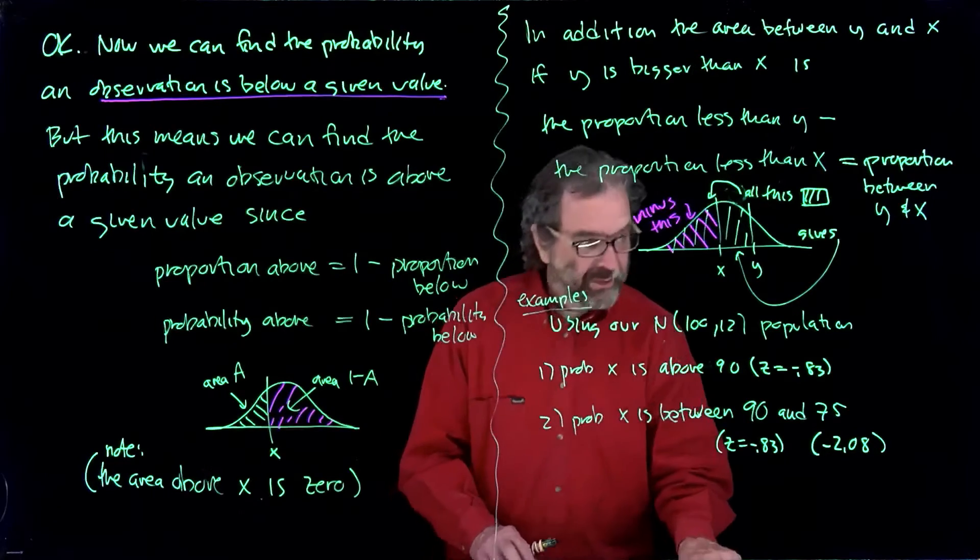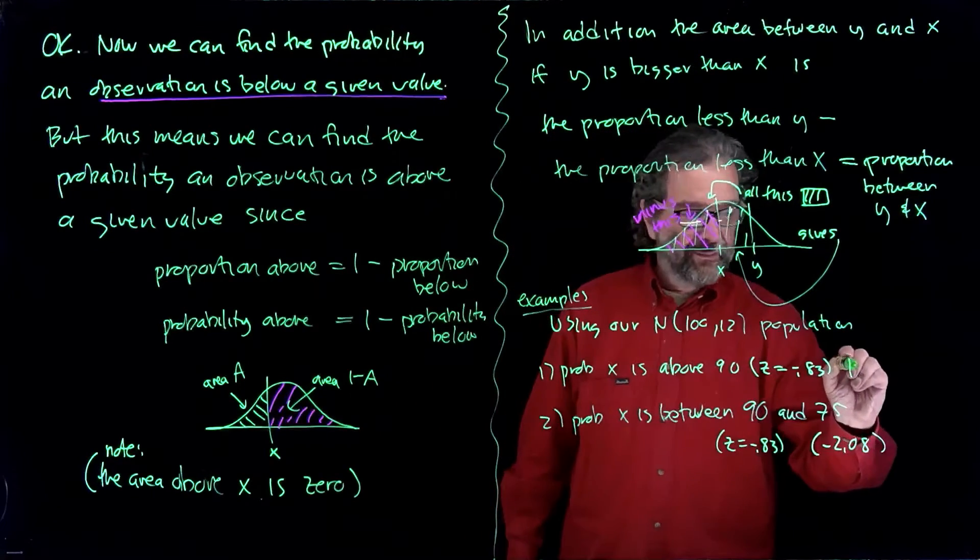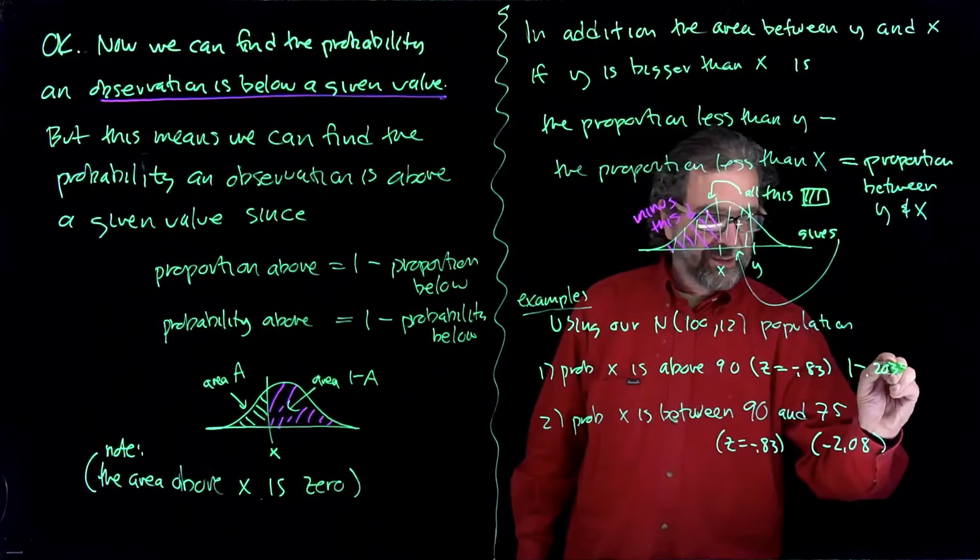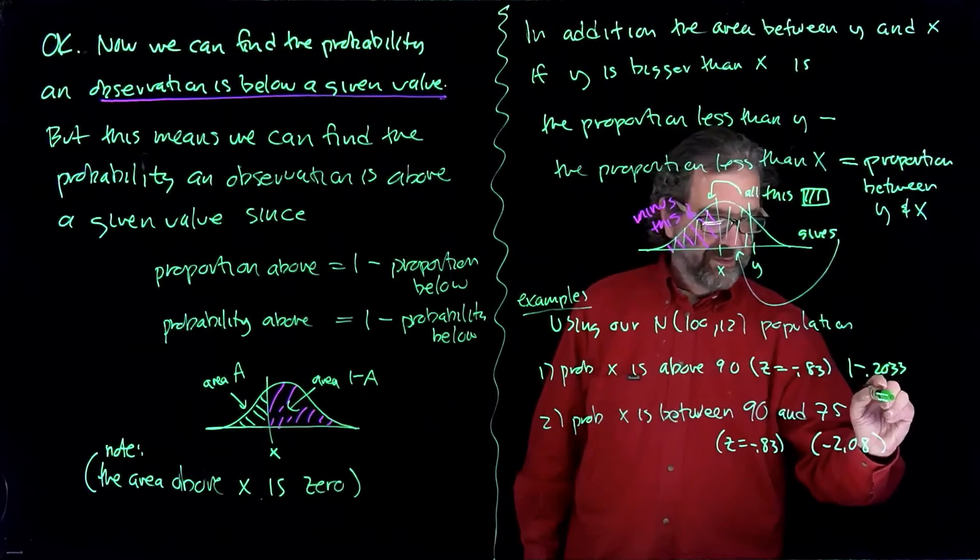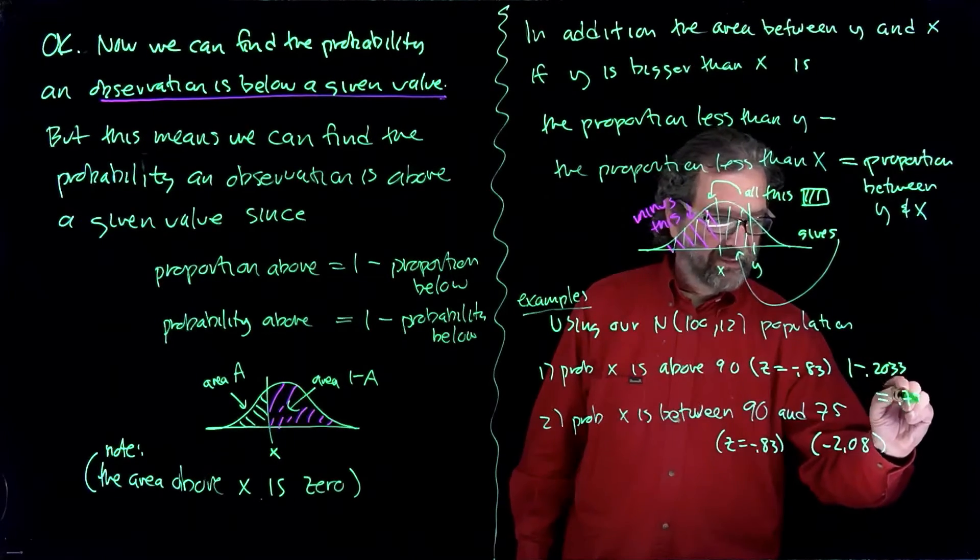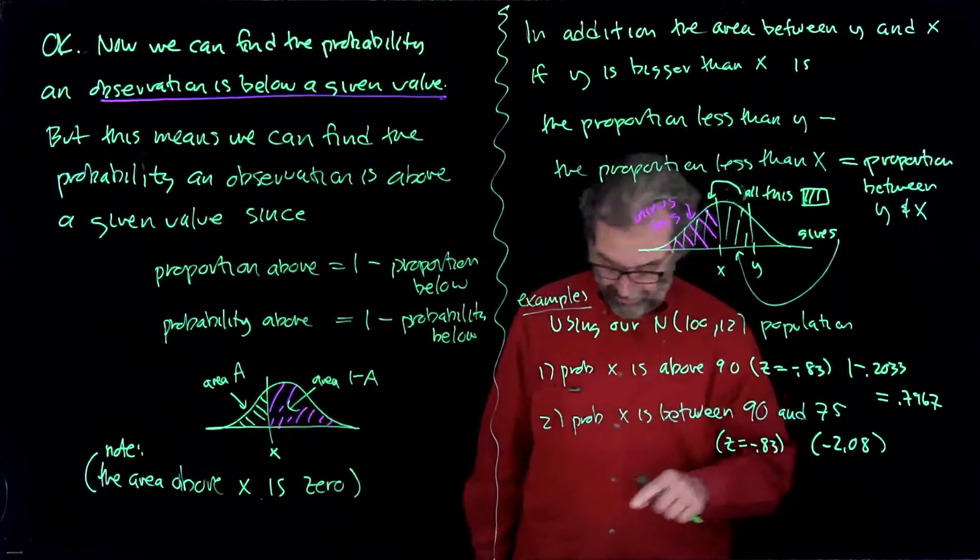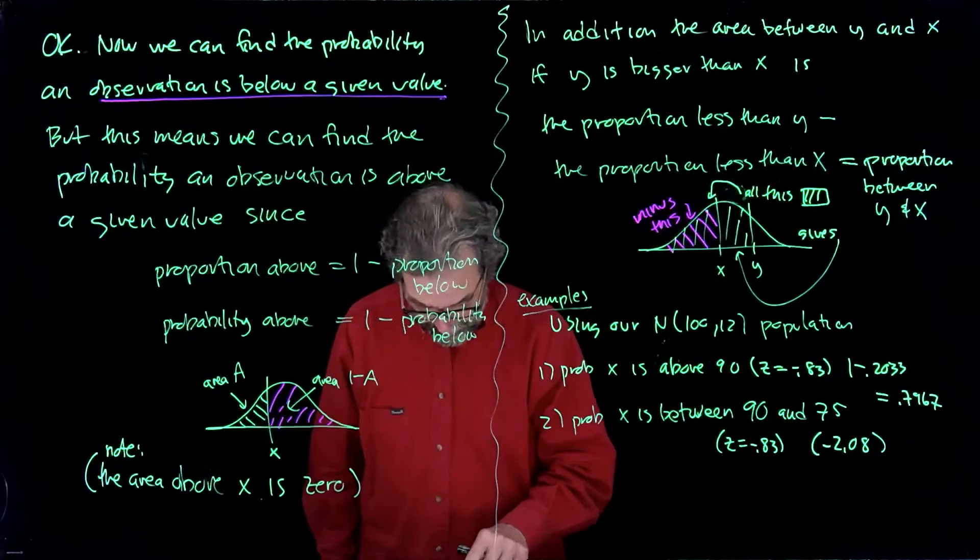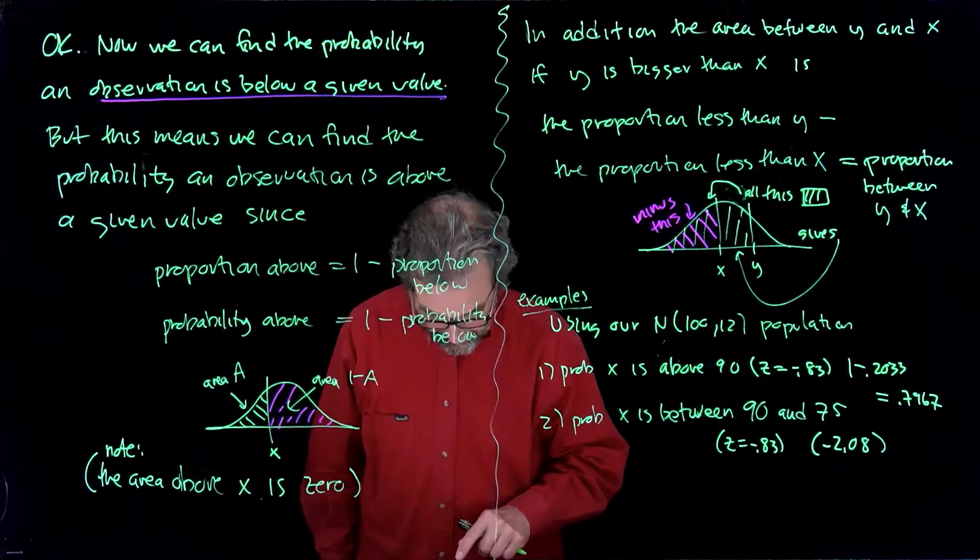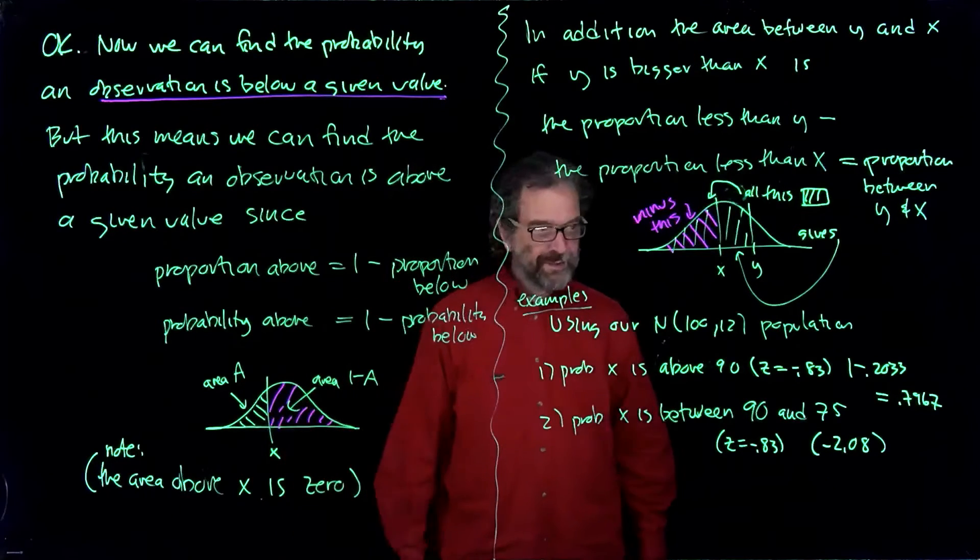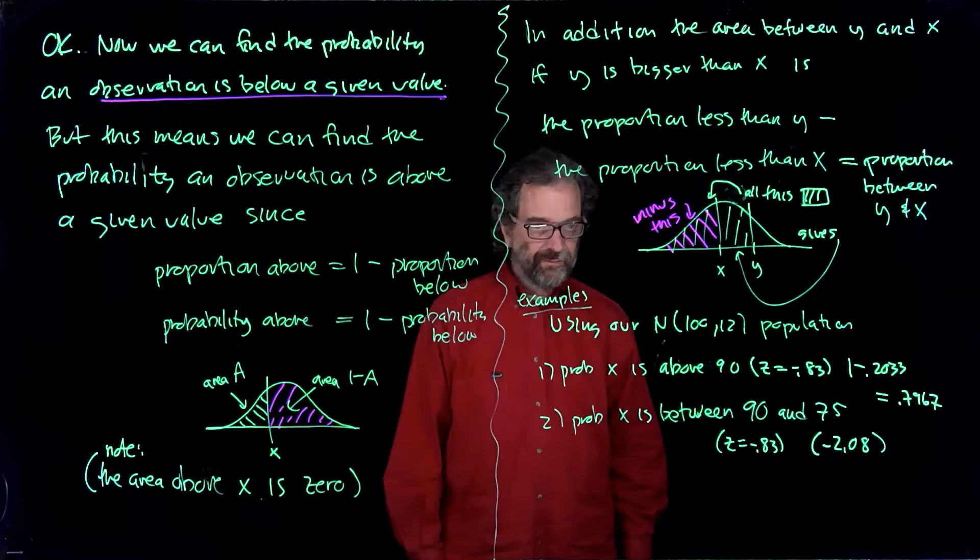.2033, so I'll get one minus .2033, and that's .7967. I'll double check that, one minus .2033, .7967. You'll be subtracting things from one many times.